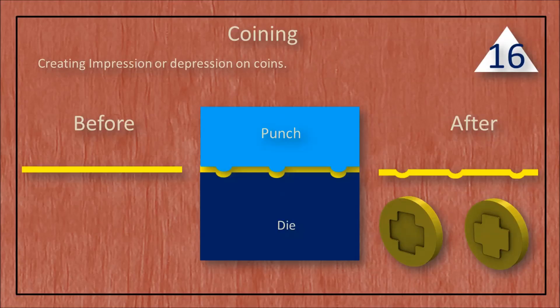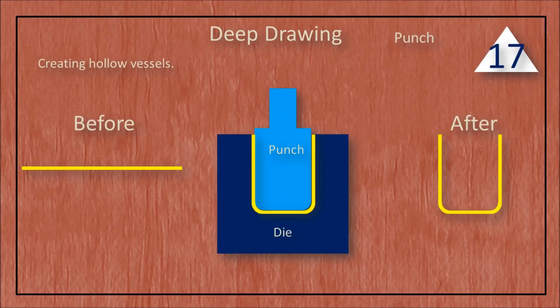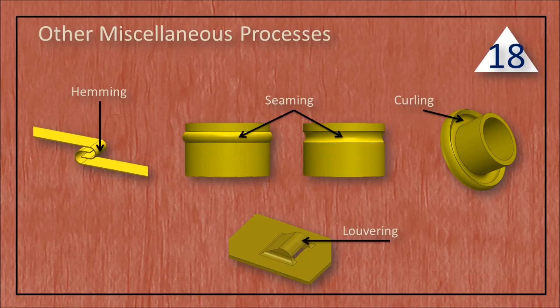Coining is the process of creating an impression or depression on coins. Deep drawing is the process of creating hollow vessels. Other miscellaneous processes include hemming, seaming, curling, and lumbering.